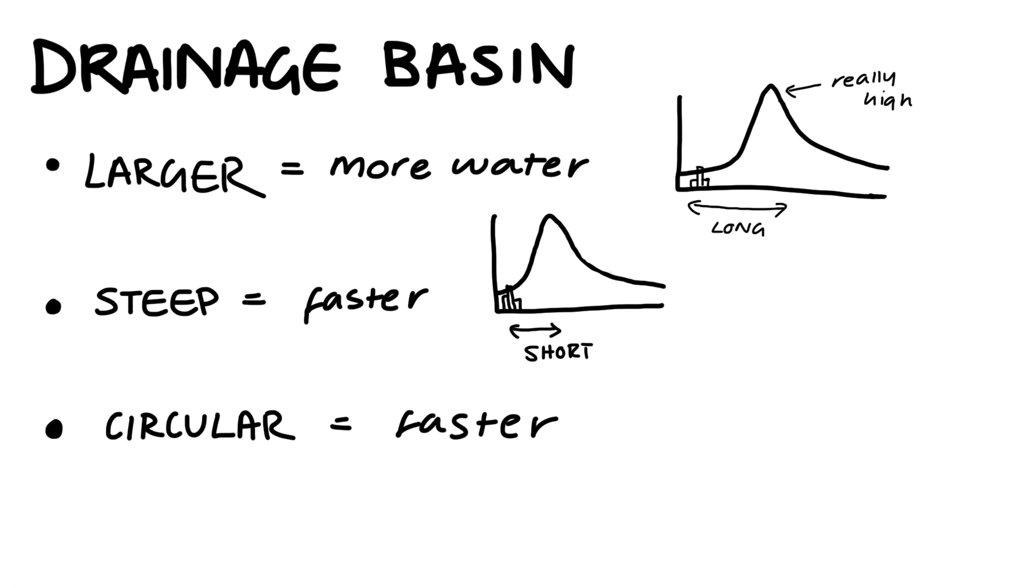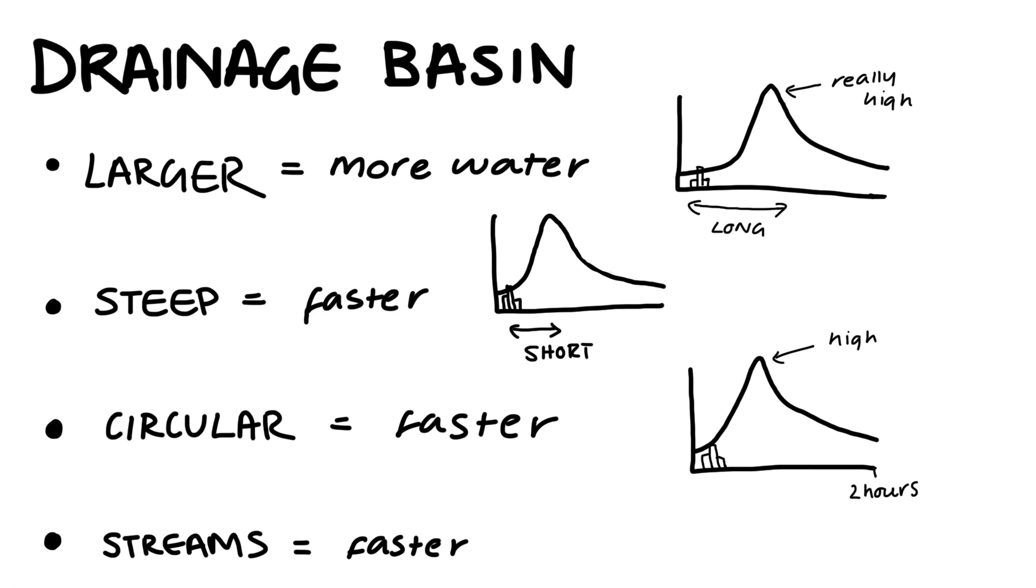Circular basins will have a much quicker hydrograph and a higher peak discharge, as all the water will reach the river at the same time. If the basin has lots of streams, it will also drain quicker, causing a shorter lag time.